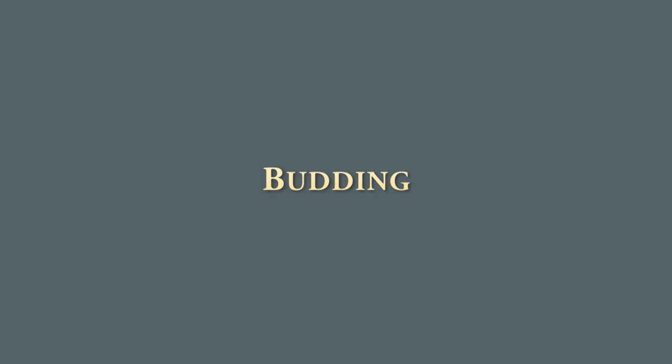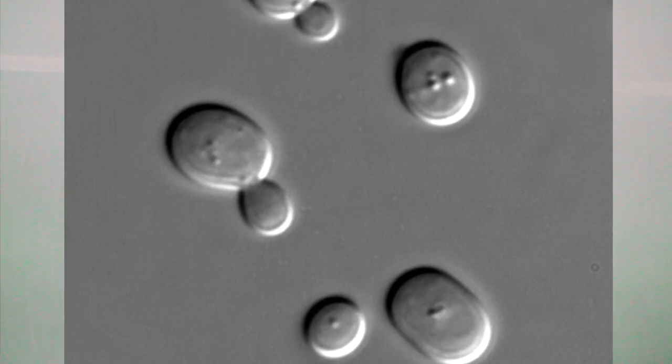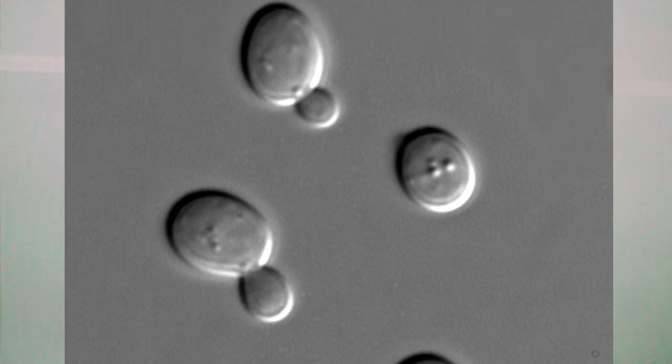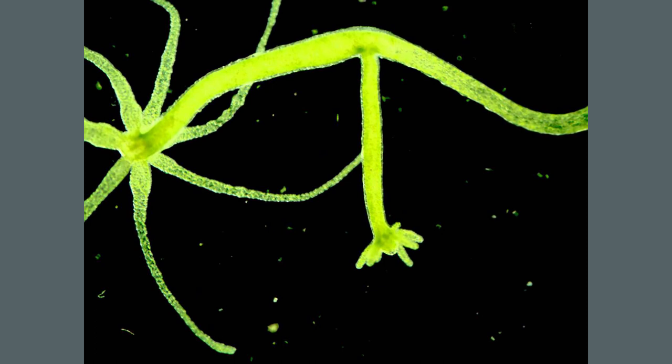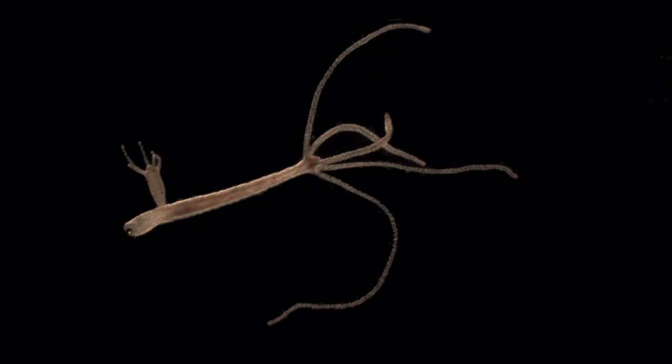Budding is a form of asexual reproduction in which a new organism develops as an outgrowth or bud due to repeated cell division at a particular point. The bud is a small rounded outgrowth capable of developing into a new individual. In Hydra, a bud develops as an outgrowth due to repeated cell division at one specific site. These buds develop into tiny individuals and once fully mature, detach from the parent body and start leading an independent life.